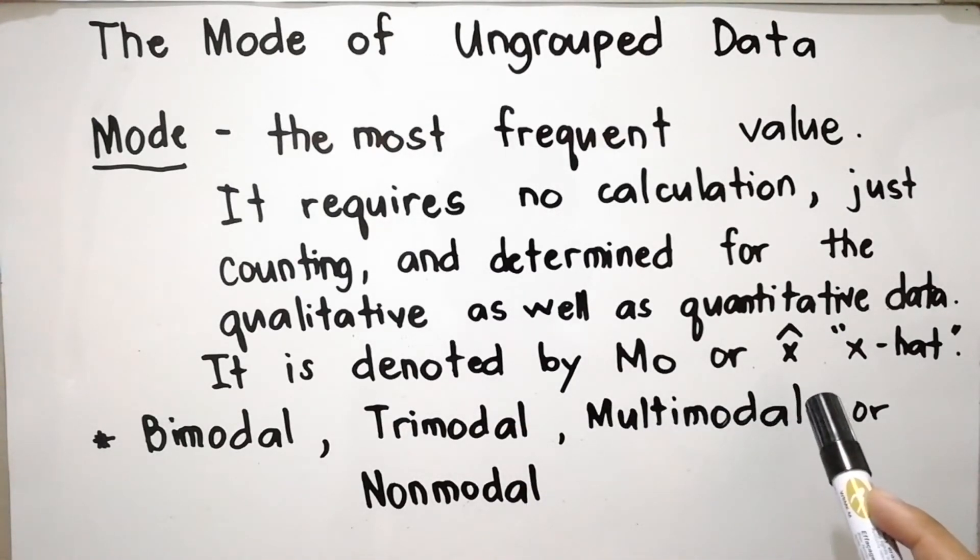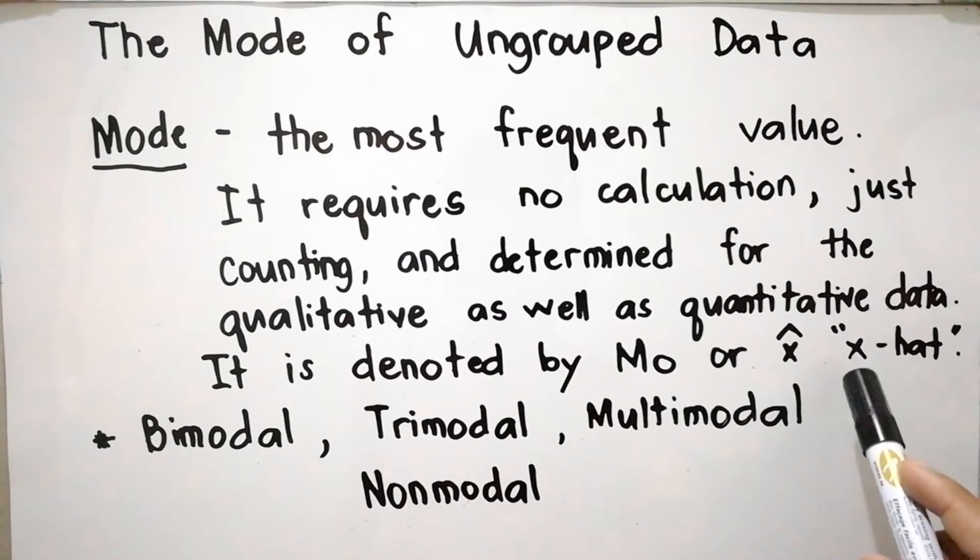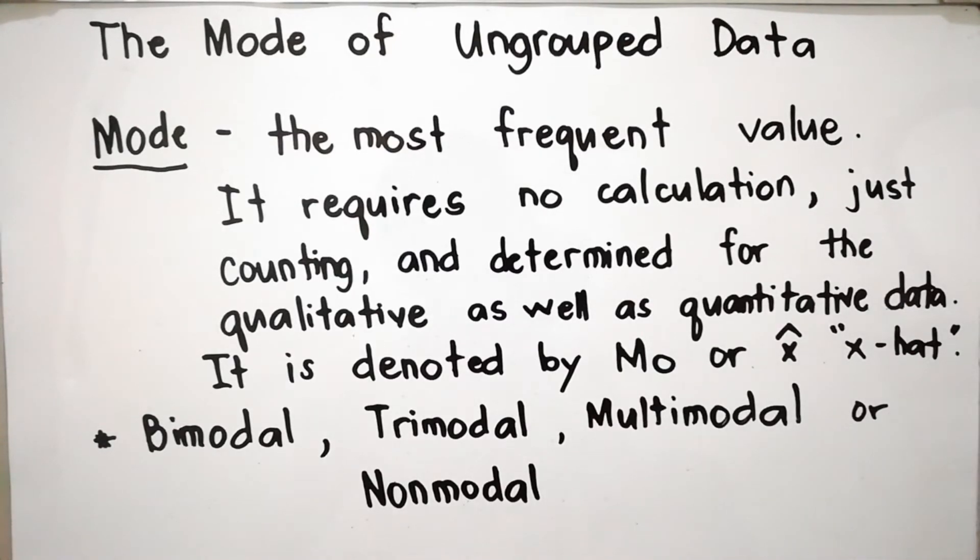Mode is denoted by Mo or x-hat. When the highest frequency corresponds to two elements or measures, it is said to be bimodal. When the distribution has three modes, it is said to be trimodal. When the distribution has more than three modes, it is said to be multimodal, or it is also possible that mode may not exist at all, so it is said to be non-modal.